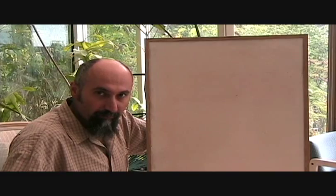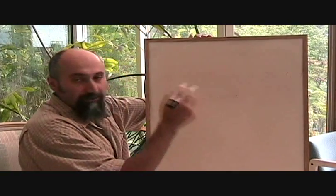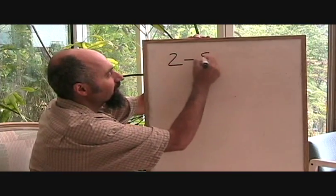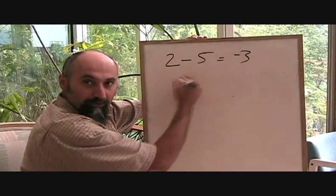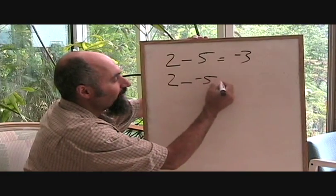Now that we've talked about multiplication of negative numbers, we can talk about subtracting negative numbers. Just a segment before this, we did something like 2 minus 5. And we got negative 3, right? Doing the number line.